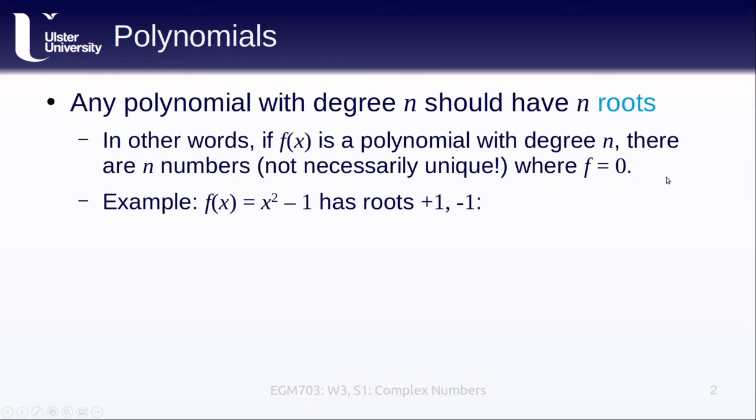For example, if f(x) is equal to x² - 1, f has two roots at +1 and -1. We can check this by setting f(x) equal to 0 and solving for x. Hopefully, it's clear that x equals plus and minus 1 is the solution here.